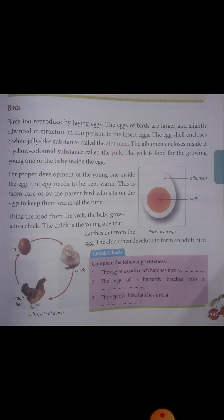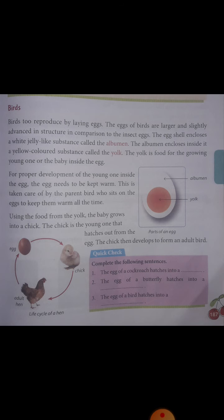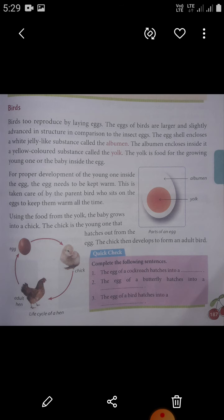In some larger species, the female will lay an egg only once every 2–3 days. Birds usually start to lay at around 5 months of age and continue to lay for 12 months. For proper development of the young one inside the egg, the egg needs to be kept warm. This is taken care of by the parent bird, who sits on the eggs to keep them warm.